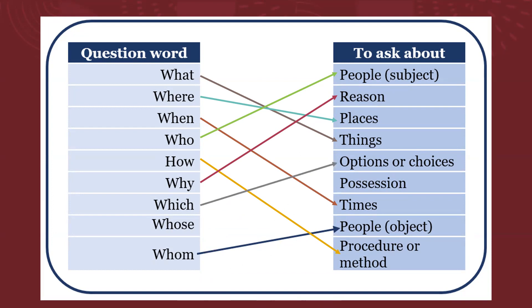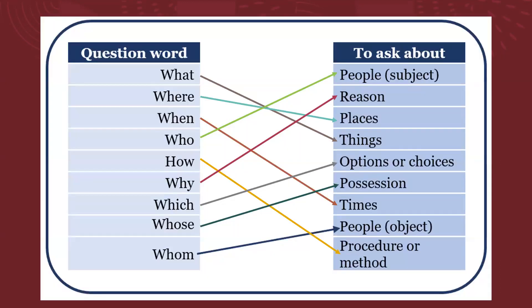WHICH — ¿cuál? Options or choices — solicita opciones. WHOSE — ¿de quién? Posesión. WHOM — ¿a quién? Pero ahora como objeto — people as object.